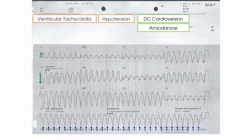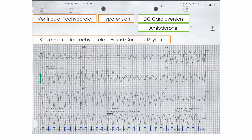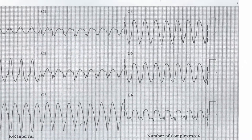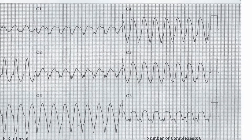Differentiating the broad complex tachycardia caused by ventricular tachycardia from that caused by supraventricular tachycardia with a broad complex rhythm is difficult. There are multiple findings which are predictive of this but none of them are absolute. One finding which is very predictive of this being ventricular tachycardia is the fact that the QRS complexes are downwards pointing across all of the chest leads. This finding is known as concordance.